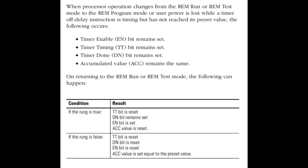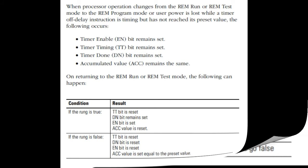On returning to the run or test mode, the following can happen. If the rung is true: TT bit is reset, Done bit remains set, EN bit is set, ACC value is reset. If the rung is false: TT bit is reset, Done bit is reset, EN bit is reset, ACC value is set equal to the preset value.